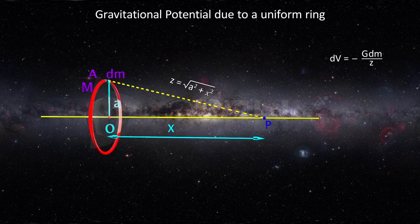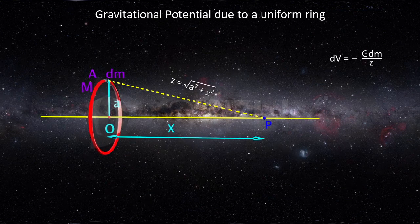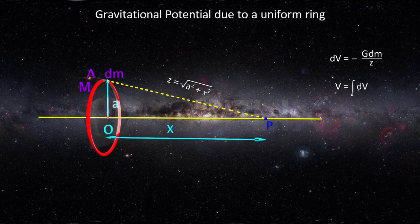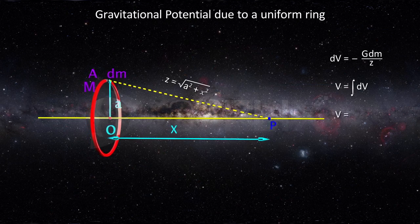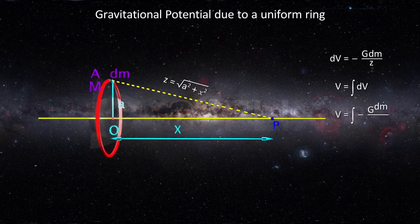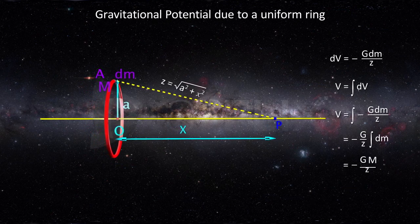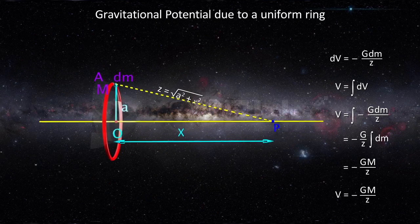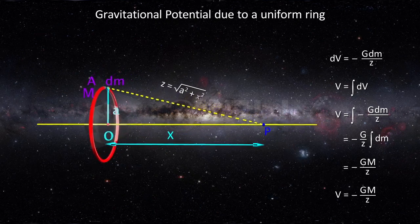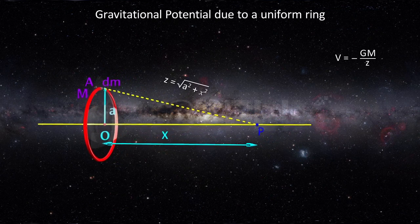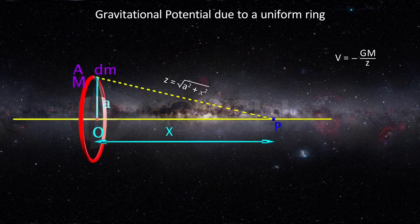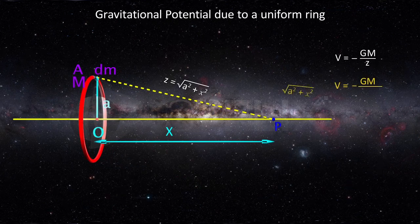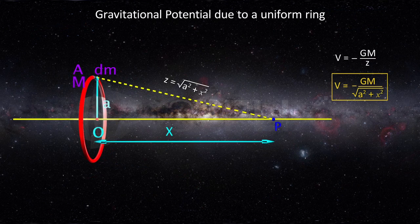Considering all such elements, the net gravitational potential at P due to the complete ring is equal to the integral of dV. Therefore, V equals the integral of minus G dm by z. Upon integration, we get V equals minus Gm by z. Hence, the gravitational potential due to the complete ring is minus Gm by the square root of a squared plus x squared.